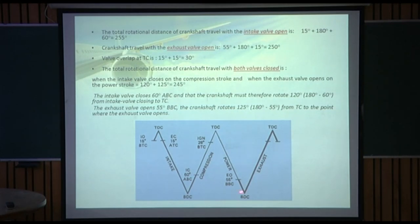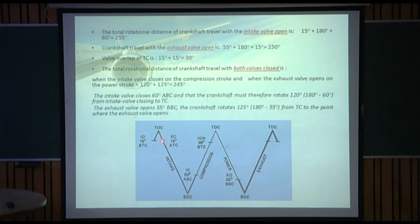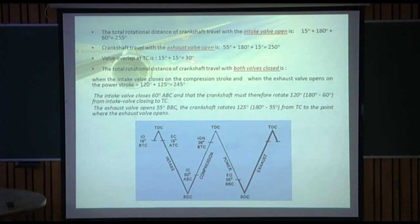The exhaust valve opens 55 degrees before bottom center on the power stroke. So the exhaust valve is open for 55 degrees on the power stroke, 180 degrees on the exhaust stroke, and 15 degrees on the intake stroke — equal to 250 degrees. Valve overlap with both valves open at top center is 15 plus 15 degrees, equal to 30 degrees.